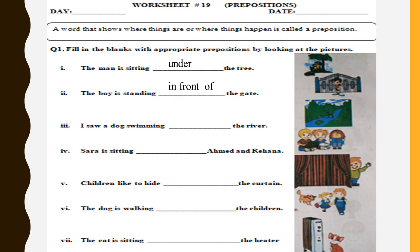Third: I saw a dog swimming ___ the river. What will come here? Very good — I saw a dog swimming across the river. Fourth: Sarah is sitting ___ Ehmad and Rihanna. Yes, Sarah is sitting between Ehmad and Rihanna. Can you see the picture? Yes, that is correct.